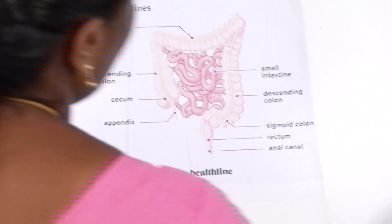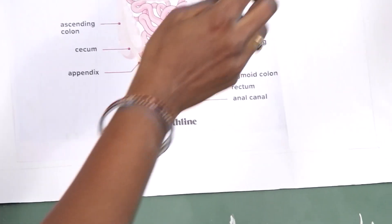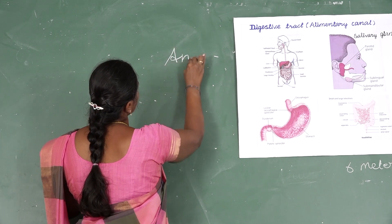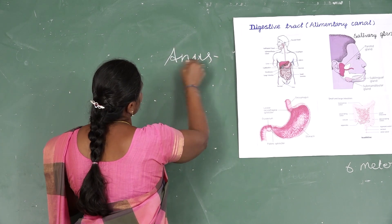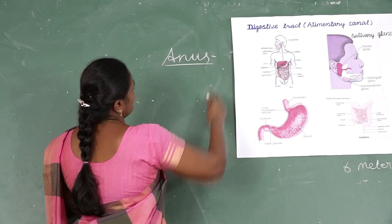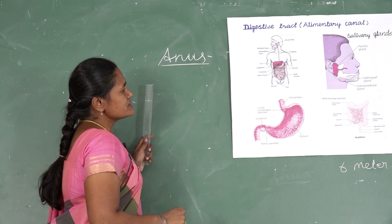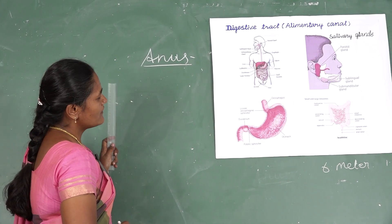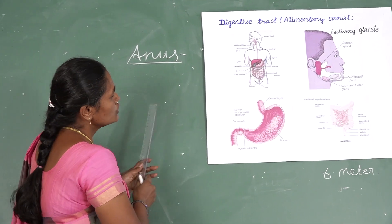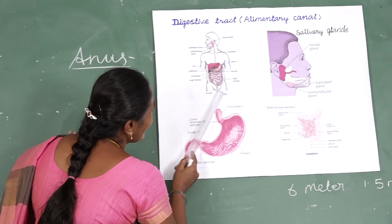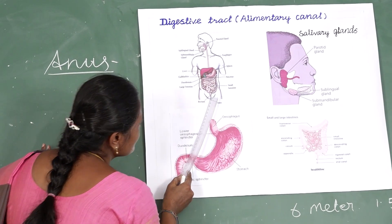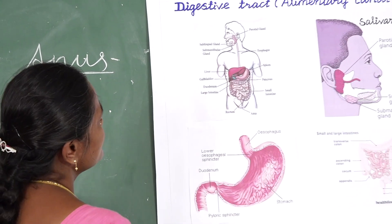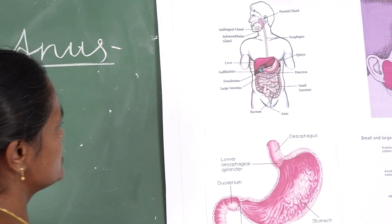Next is the anus. The waste is thrown out of our body through the anus. This completes the digestive system.